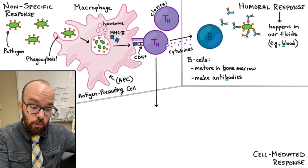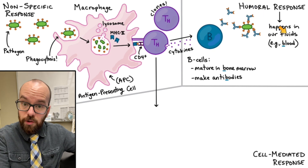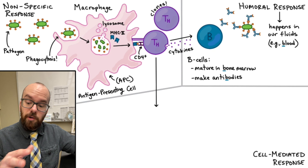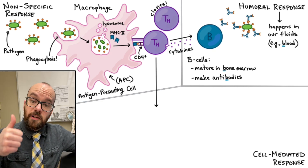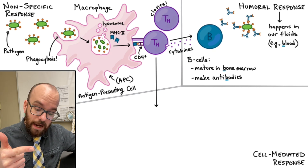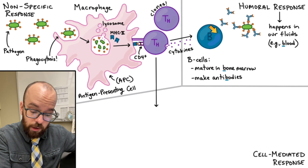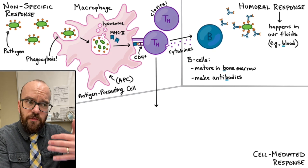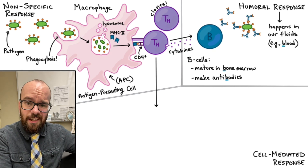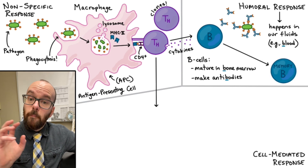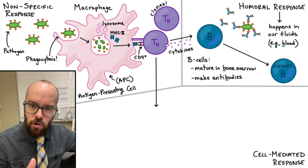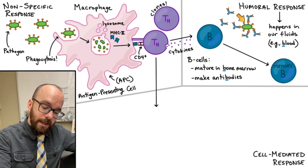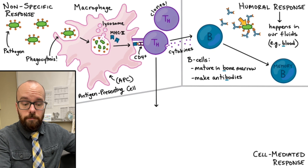The third B is that this all happens in the fluids of our body — that's what humoral response means, humoral meaning happening in our fluids. This includes our blood, lymphatic system, lymph nodes and vessels, and the interstitial fluid between cells. We want to be able to fight off this pathogen in the future without getting sick again, so many of these B cells stick around as memory B cells, ready to fight off that pathogen if it ever returns — we're waiting for you.